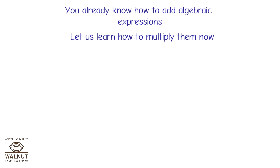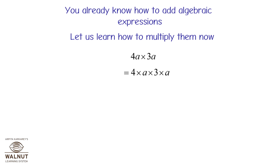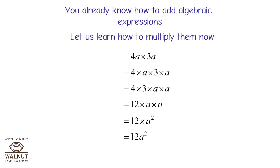You already know how to add algebraic expressions. Let us learn how to multiply them now. 4a into 3a is equal to 4 into a into 3 into a, which is equal to 4 into 3 into a into a, which is equal to 12 into a squared, which is equal to 12a squared.